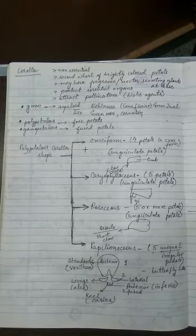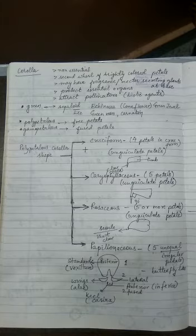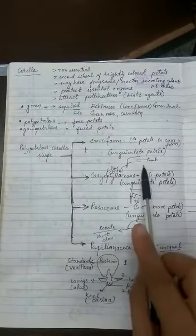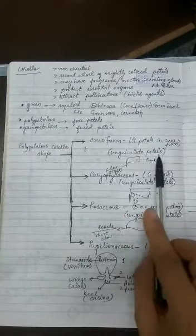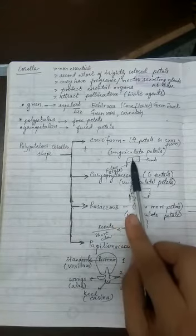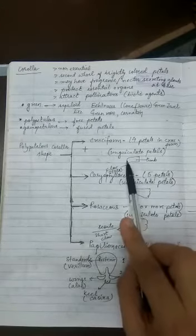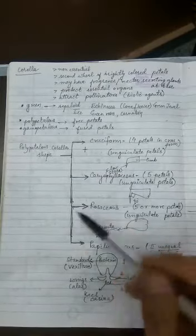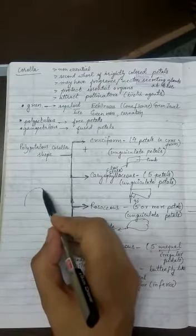So in the case of Brassicaceae family, you will find four petals are there. And they form a cross type of shape. And I have drawn the shape, how exactly the petal looks like. Such petals are called as unguiculate. Because they have a limb and they have a claw type of structure. If you have ever paid attention to the rose petal, a small dot like thing is present here.